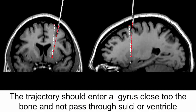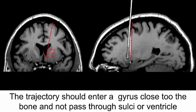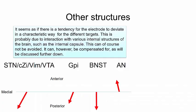For the same reason, the trajectory should enter a gyrus close to the bone and not pass through sulci or through the ventricle. If you need to pass through the ventricle, then it's better to have a clean entry rather than sliding on the lateral wall. Other structures might have a similar effect. It seems as if there is a tendency for the electrode to deviate in a characteristic way for the different targets. This is probably due to interaction with various internal structures of the brain such as the internal capsule. This can of course not be avoided but it can be compensated for as will be discussed further down.